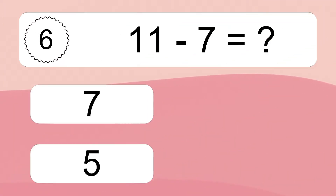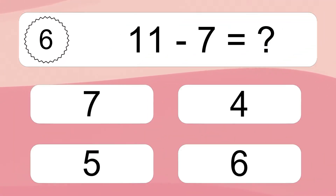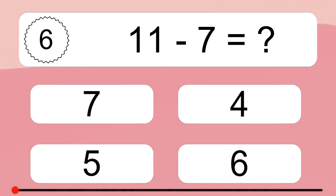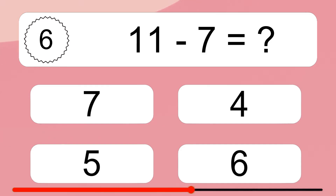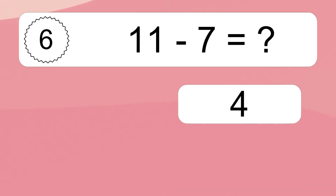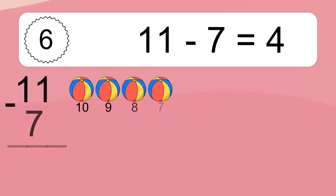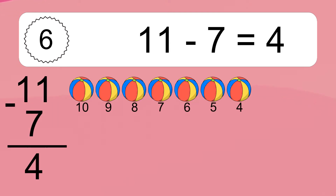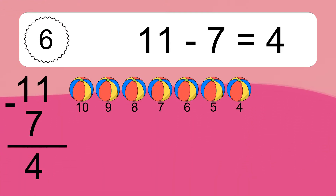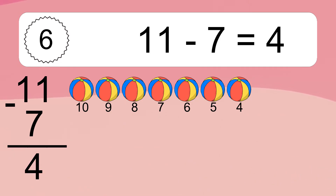11 minus 7 equals what? 11 minus 7 equals 4. Let's count it. 10, 9, 8, 7, 6, 5, 4.